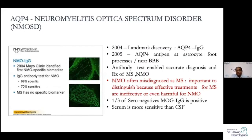The 2004 discovery was a landmark. Then in 2005, the antigen was discovered — an antigen at the astrocyte foot process near the blood-brain barrier. The antibody test enabled accurate diagnosis. Importantly, NMO is often misdiagnosed as MS, so it is important to distinguish them because the long-term treatment is quite different. Treating NMO patients with MS disease-modifying therapies can be harmful. This antibody is highly specific, but about 70–80% of patients will have it.